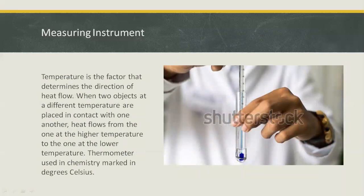Temperature is the factor that determines the direction of heat flow. When two objects at different temperatures are placed in contact with one another, heat flows from the one at the higher temperature to the one at the lower temperature. We use a thermometer to measure temperature.